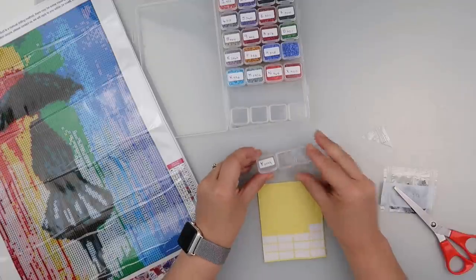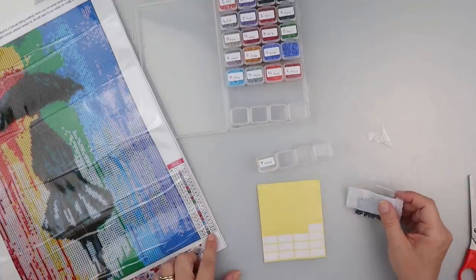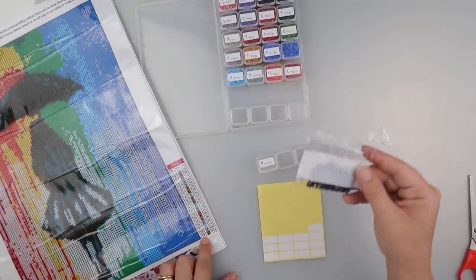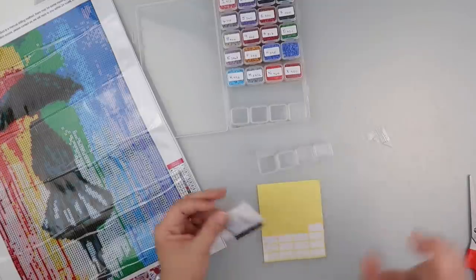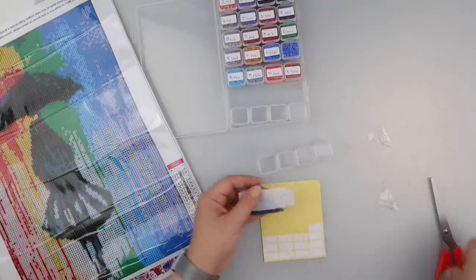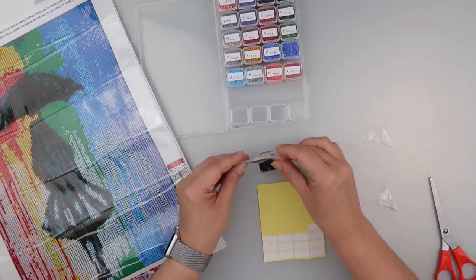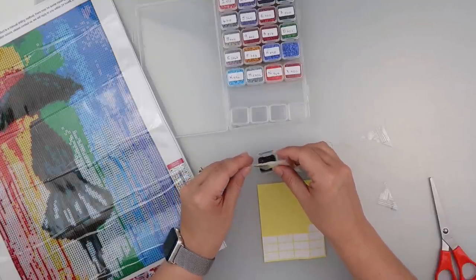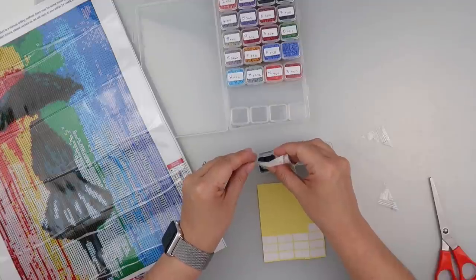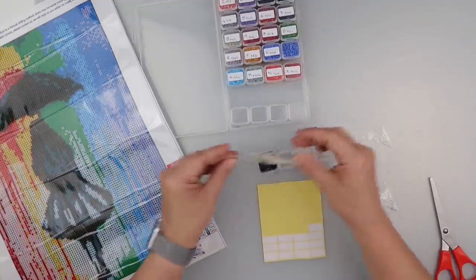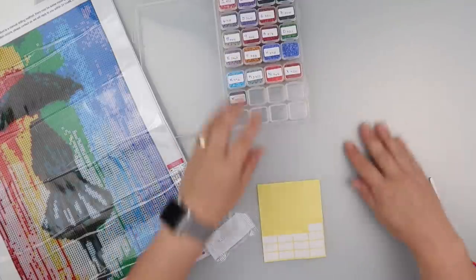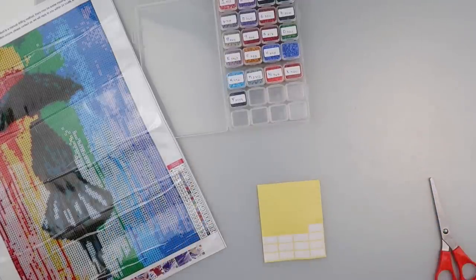And then even though this is the last one, I'm still going to check it. So Y, 3799, bag number 19, yes, we all match up. Which means the painting is going to look like it's supposed to, which is the idea after all. Okay, so that is the diamonds all ready for her.